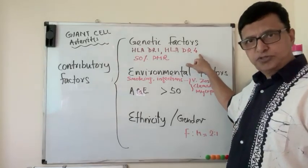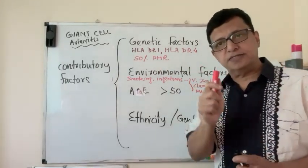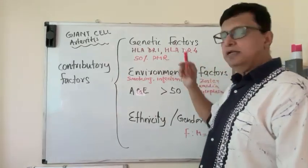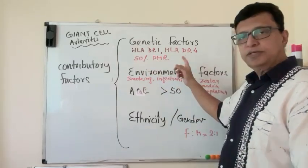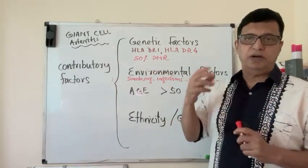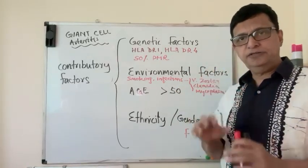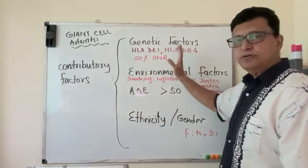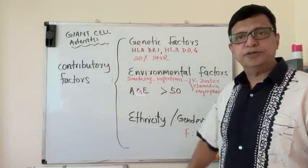HLA-DR1, HLA-DR4 positive patients. 50% of Giant Cell Arteritis cases are Polymyalgia Rheumatica patients. When I did the Polymyalgia Rheumatica lecture, I told you that 10 to 30% of Polymyalgia Rheumatica patients can present with Giant Cell Arteritis. Now I am telling you 50% of Giant Cell Arteritis patients are Polymyalgia Rheumatica.